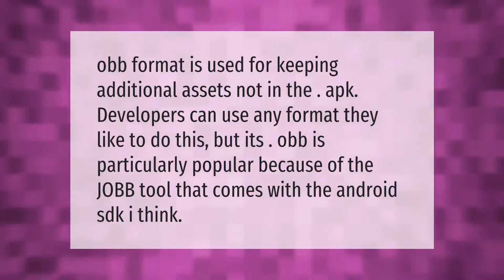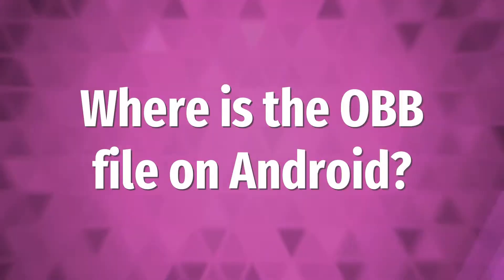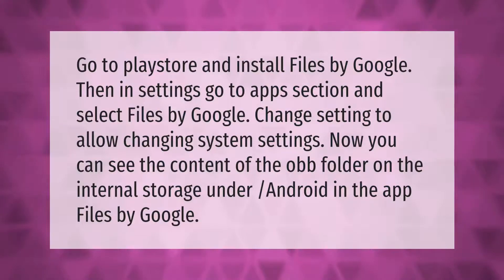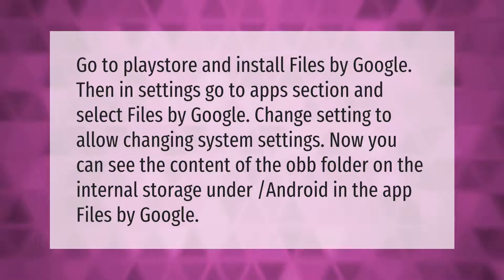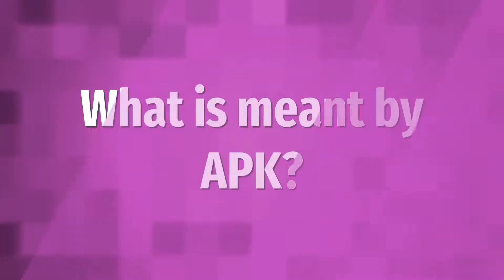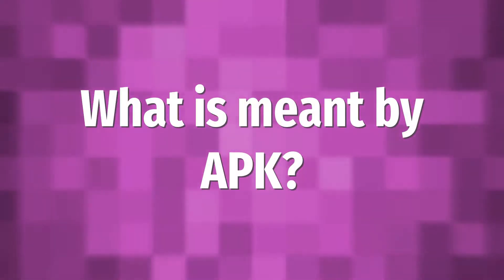Go to the Play Store and install Files by Google. Then in Settings, go to the Apps section and select Files by Google. Change the setting to allow changing system settings. Now you can see the content of the OBB folder on the internal storage under Android in the Files by Google app.